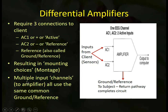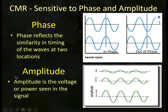If we have multiple inputs — for example, 19 electrodes on the scalp — they are all being compared initially to the system ground or system reference.